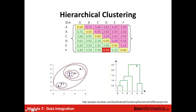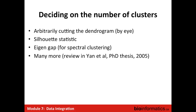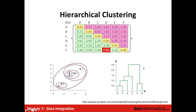To decide on the number of clusters in hierarchical clustering, most commonly people arbitrarily cut by eye. Here you have a dendrogram, and people would cut it into two clusters because that looks most reasonable. This tree is called the dendrogram.